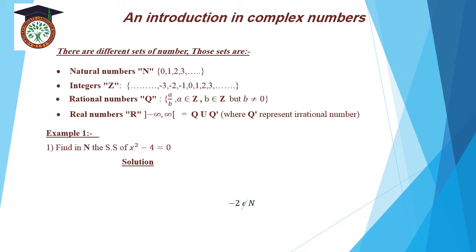The solution set of x² minus 4 equals 0. Move negative 4 to the other side by adding positive 4. Then x² equals 4. Then x equals square root of 4, which equals positive or negative 2. The solution set equals {negative 2, 2}.